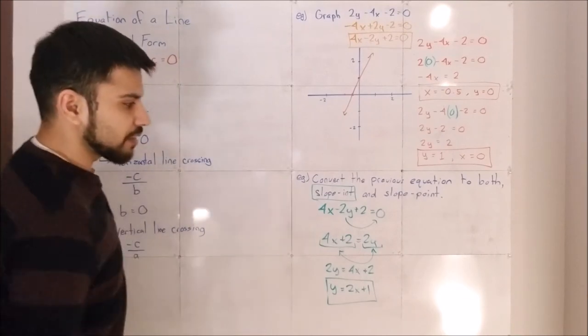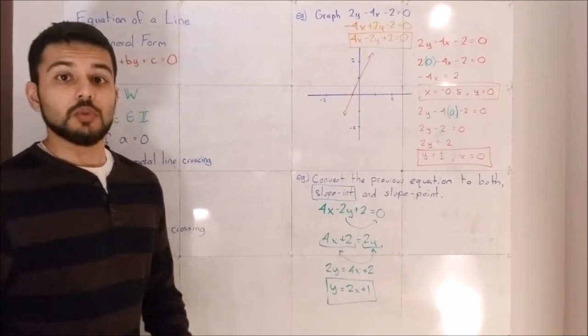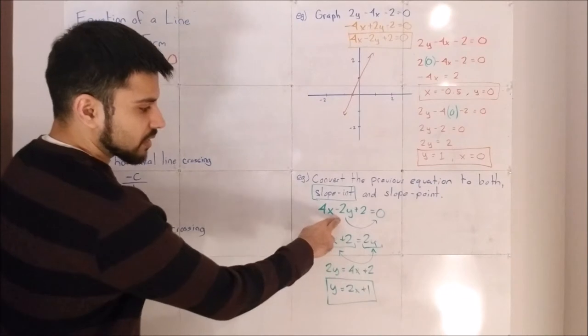For slope-intercept form, I start by writing the equation. Slope-intercept form is y equals mx plus b. The y is isolated, so we're going to isolate that y.